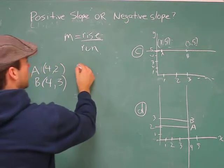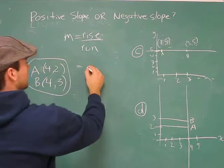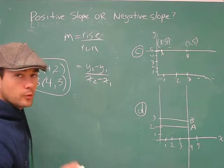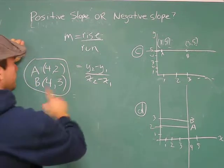Doesn't matter which ones I ordered. So rise over run. Y2 minus y1 over x2 minus x1. Always start by writing your formula. Gets it in here. Really. Okay.